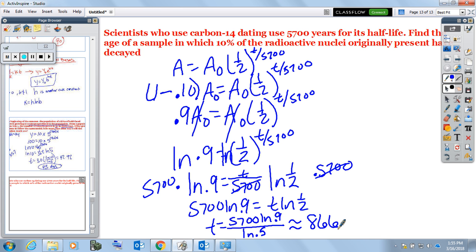So to interpret this, the sample would be about 866 years old in which 10% of the radioactive nuclei originally present has decayed. So it took about 866 years for 10% of that nuclei to actually decay.